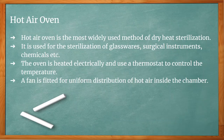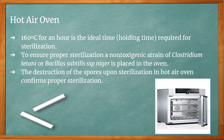Hot air oven is the most widely used method of dry heat sterilization. It is used for the sterilization of glassware, surgical instruments, chemicals, etc. The oven is heated electrically and uses a thermostat to control the temperature. A fan is fitted for uniform distribution of hot air inside the chamber. The ideal sterilization condition is 160 degrees Celsius for one hour.